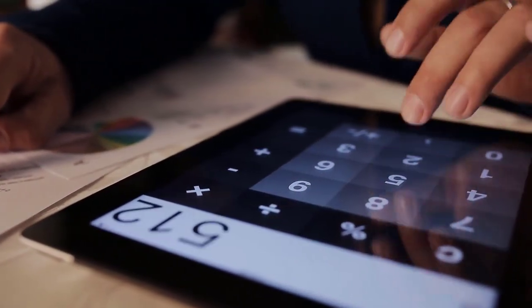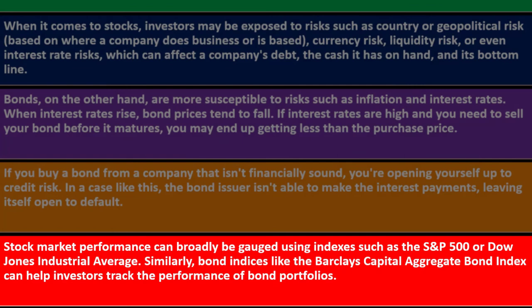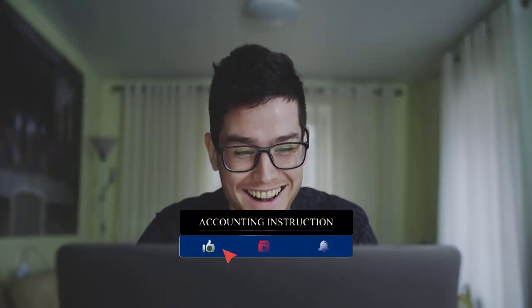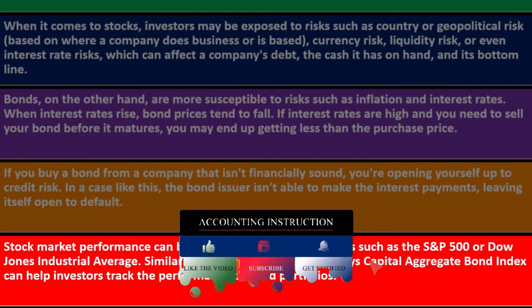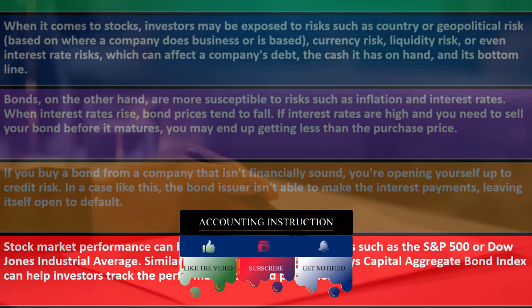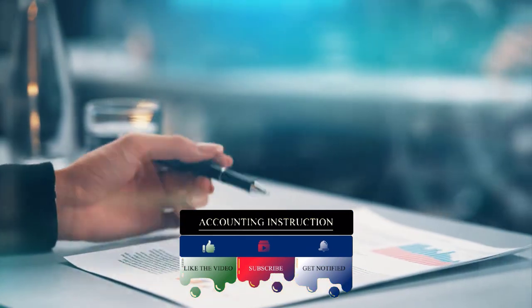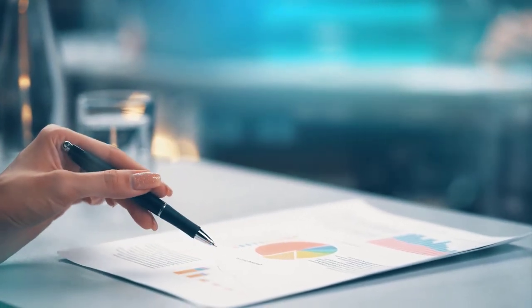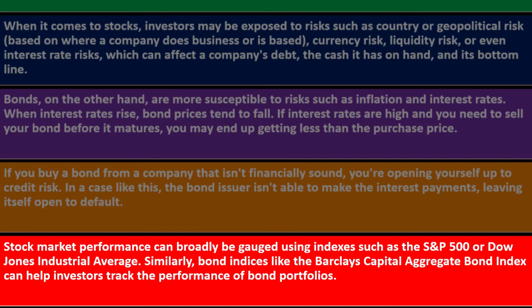Stock market performance can broadly be gauged using indexes such as the S&P 500 or Dow Jones Industrial Average. These indexes give us an idea of sections of the market, and if we use investment tools like ETFs or mutual funds tied to these indexes, it can potentially cost less in terms of management fees. Similarly, bond indexes like the Barclays Capital Aggregate Bond Index can help investors track the performance of bond portfolios.